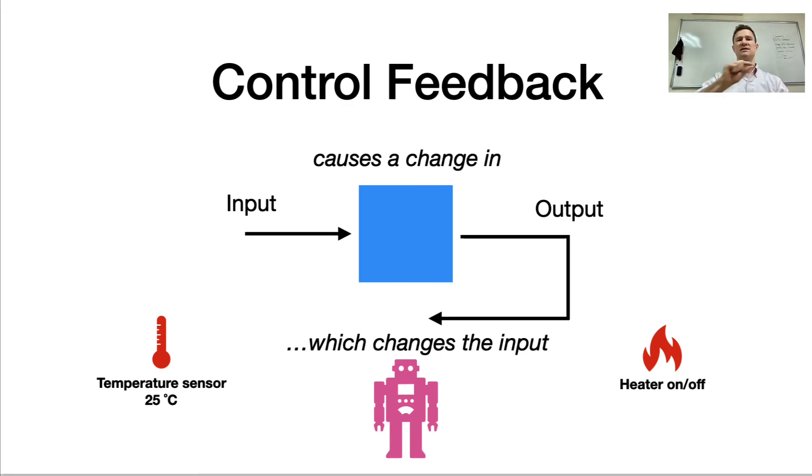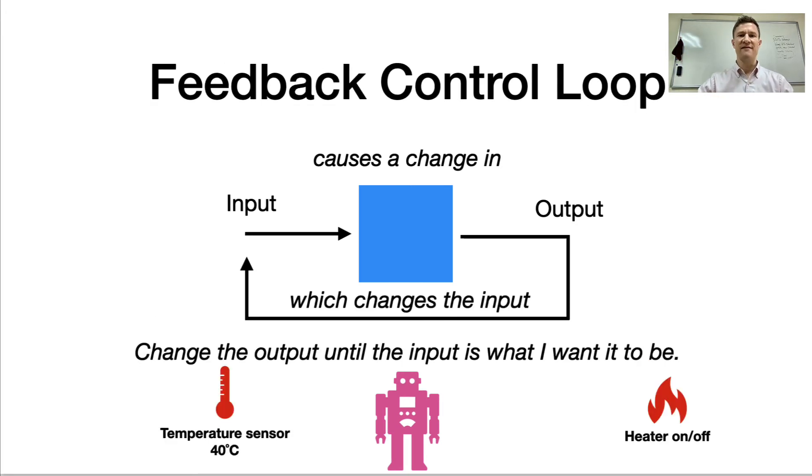And so what closes this to be something that we call a feedback control loop is that the temperature sensor causes something to happen with the output, which then changes the input because the temperature in the room is going to go up. We're going to use some logic to check and see should the heaters still be on. And the input changes the output, which changes the input, which changes the output, and it goes over and over and over again until ideally the temperature stays at 40 degrees Celsius. This is a feedback control loop.